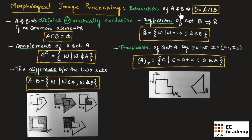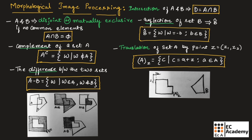The union of two sets A and B is represented as C = A ∪ B. The intersection of sets A and B is represented as A ∩ B. Two sets A and B are said to be disjoint or mutually exclusive if no common elements are present, represented as A ∩ B = ∅.